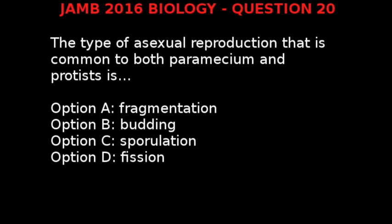JAM 2016 Biology question 20. The type of asexual reproduction that is common to both paramecium and protists is: option A, fragmentation; option B, budding; option C, sporulation; option D, fission.